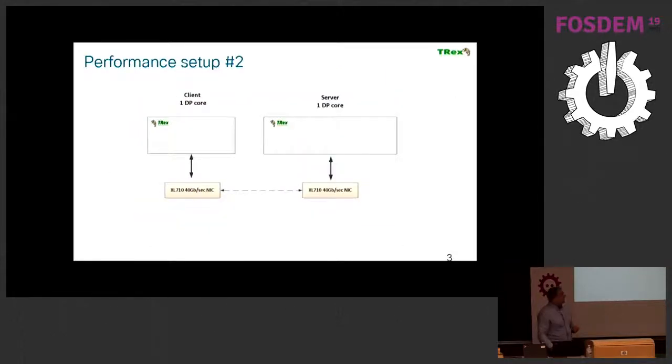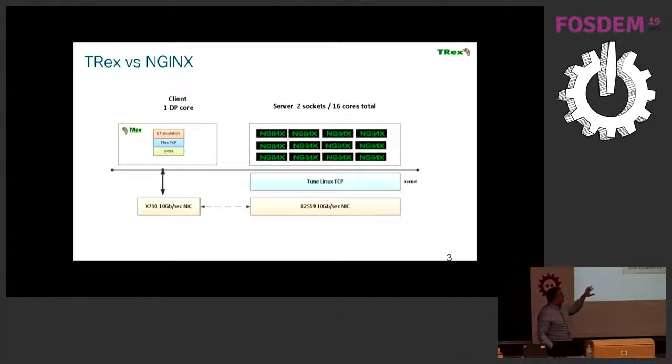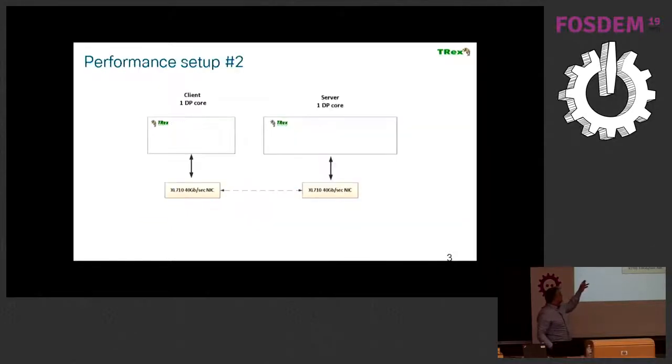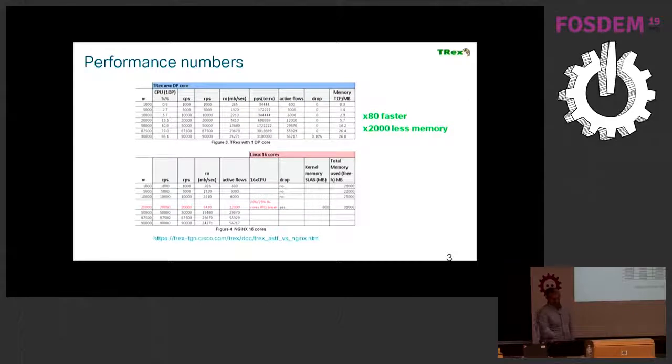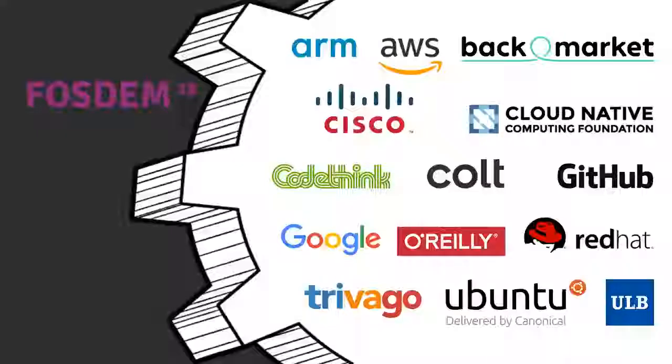Just to show you the last comparison, we compared Nginx with TRex to TRex client and server. The performance is a factor of 100 faster, and from memory perspective is three orders of magnitude. That's it.